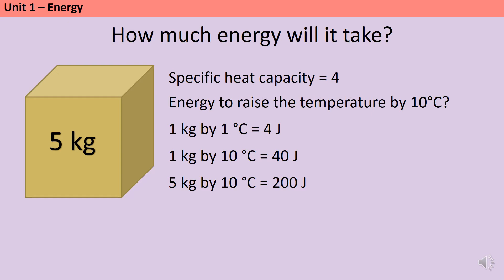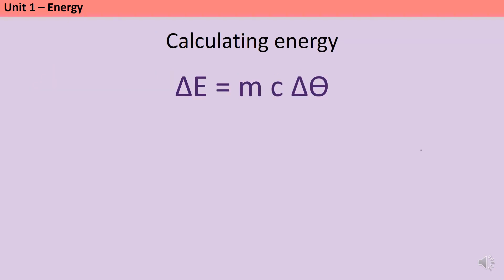Hopefully that makes sense, and working through that example we've basically worked out what the formula is that you need to have memorised. Here's the equation we need to calculate the amount of energy required to heat up an object. This is the third equation on the second physics equation sheet, which is the one you're given in the exam — so you don't need to memorise it, though it's one of the more intuitive equations. It's worth having a look at it because there are a couple of things you might not have seen before that might trip you up. The first is this triangle symbol, which is called a delta.